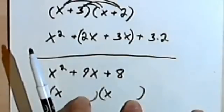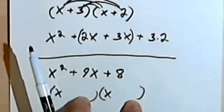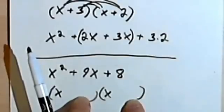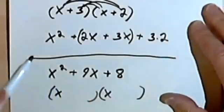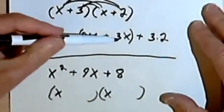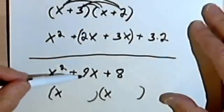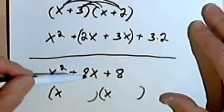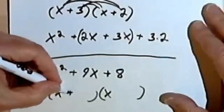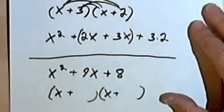Now, if they were negative, then when we added the terms in the middle, we would have ended up with a negative number over here. But we didn't. We ended up with a positive 9. So both of the signs must be positive.